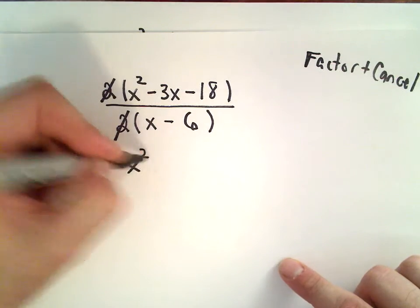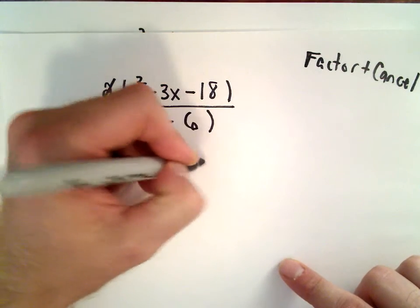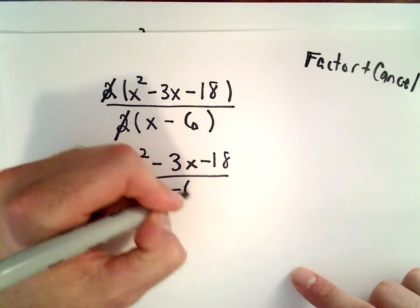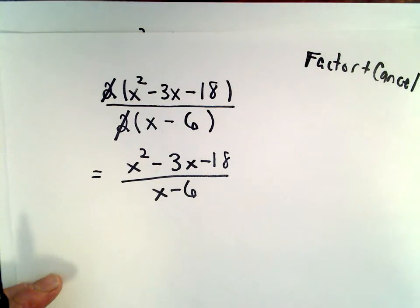Okay, so now in the numerator, I'm left with x squared minus 3x minus 18. The denominator, there's nothing else you can do with it. You're just left with x minus 6.